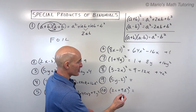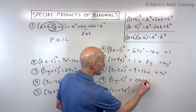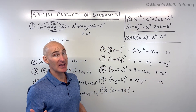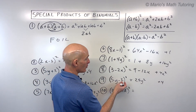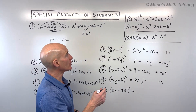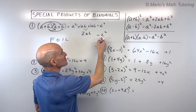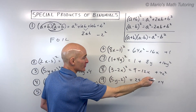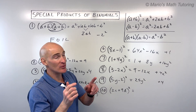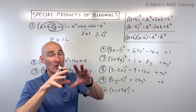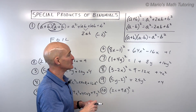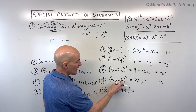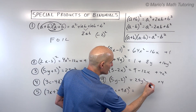Number nine: first term squared is 25y squared. Last term squared is positive 4. A common mistake students make is doing negative 2 squared on a calculator without parentheses — the calculator applies the exponent first then multiplies by negative 1, giving negative 4. Make sure to put it in parentheses as the quantity squared. So negative 2 times negative 2 is positive 4. The middle term: negative 10y doubled is negative 20y.